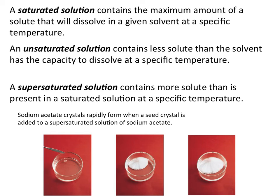A supersaturated solution is created when you've added more solute than is possible to be dissolved in the saturated solution volume of solvent. In order to create supersaturated solutions, we usually have to add heat. By adding heat, we increase the temperature of the solvent, and the solvent is therefore able to dissolve more of that particular solute.